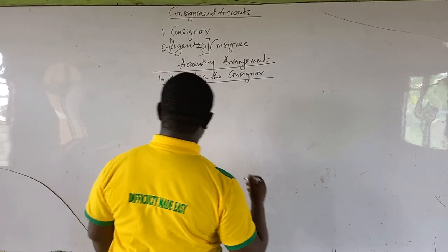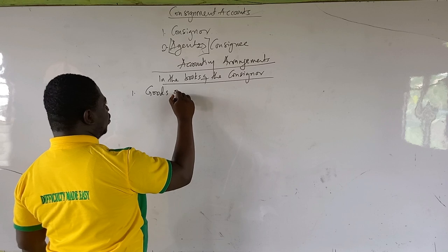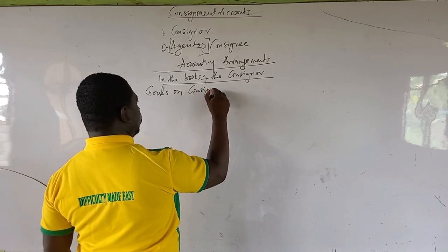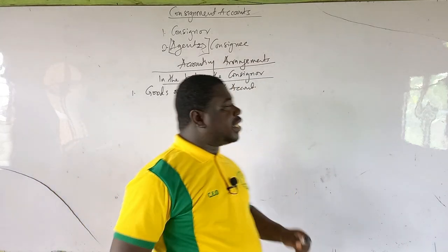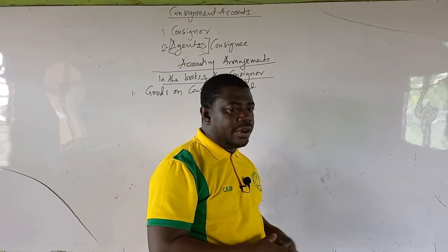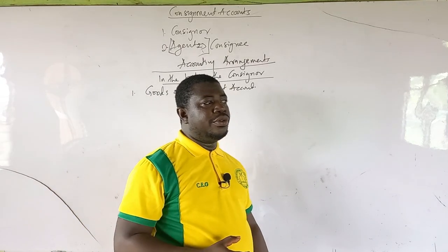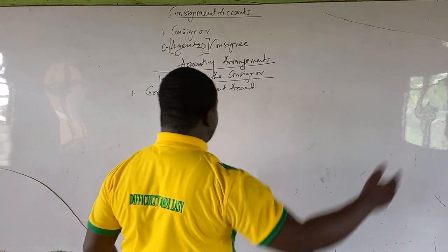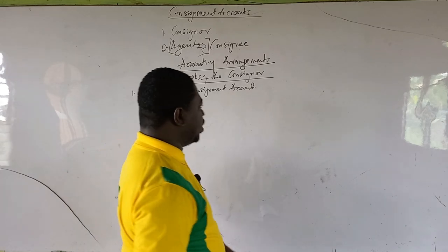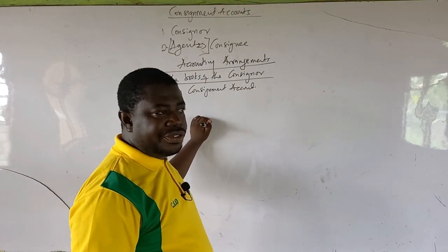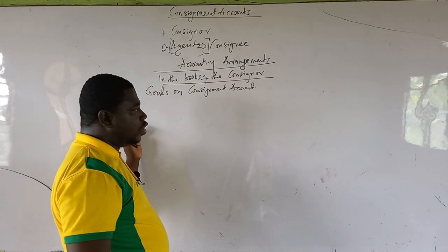In the books of the consignor, the first account to prepare is the goods on consignment account. This is a simple T-account. According to the double entry rule for a real account, we credit what goes out. So we credit the goods sent out on consignment. At the end of the period, we close the account to the trading account. It's basically just two entries: the transfer and then the closing off.